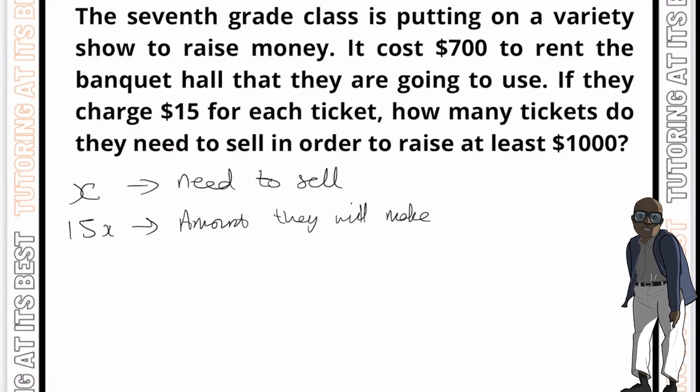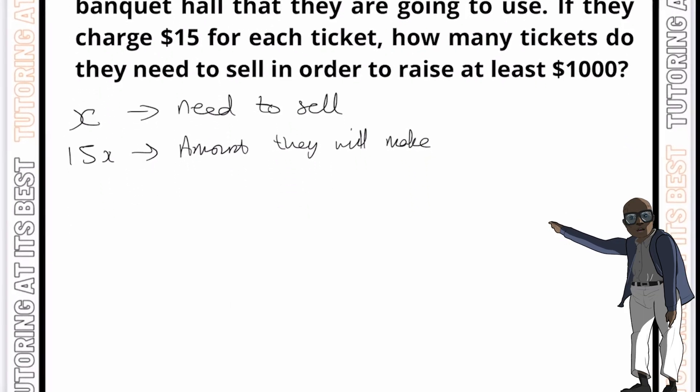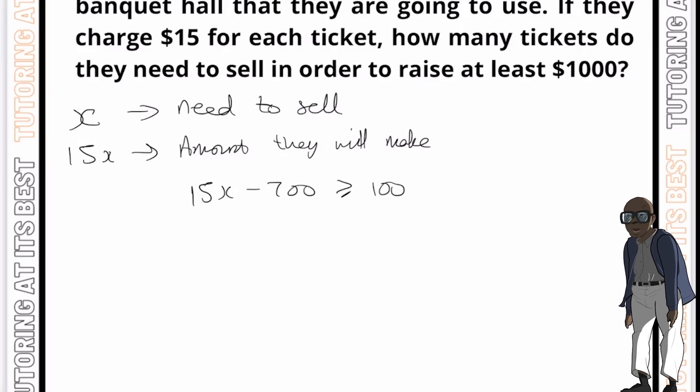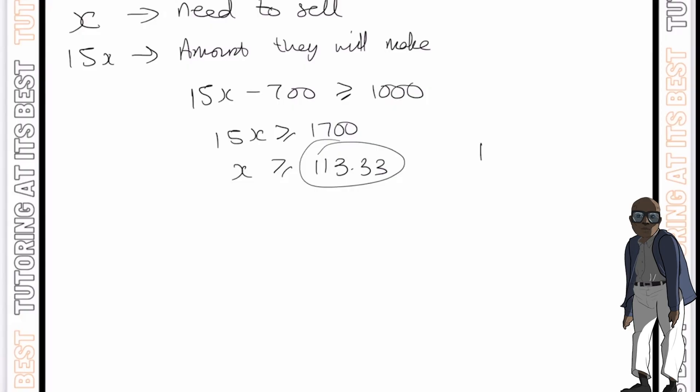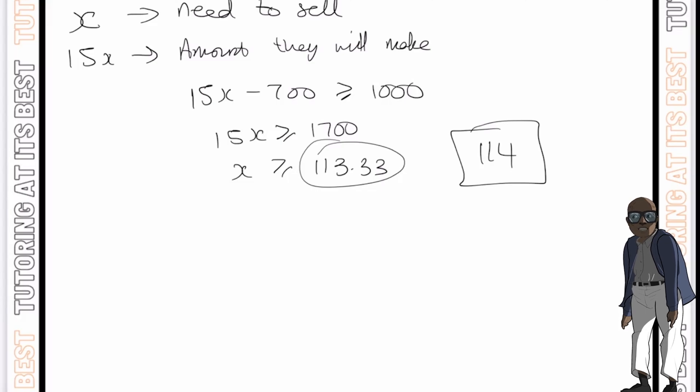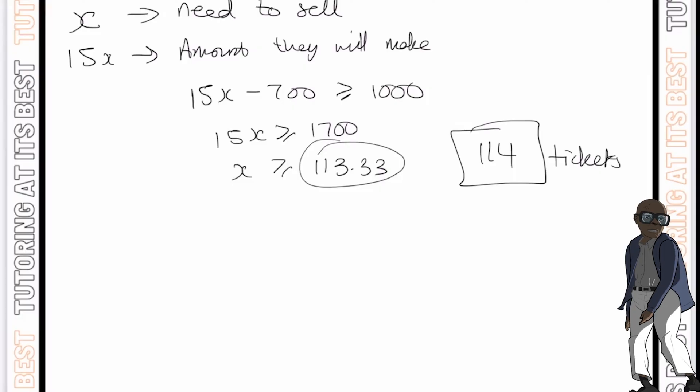Now the total amount they need to make at least is $1,000. So how do we represent that in an inequality? Well, we can write 15x minus 700 has to be greater than or equal to 1000. And if we simplify that, we can have 15x, which is greater than or equal to 1700. And then if we divide both sides by 15, we can say x is now greater than or equal to 113.33. And if we round that up, that would give us 114. So they now need to sell at least 114 tickets to raise at least a thousand dollars. And there we are.